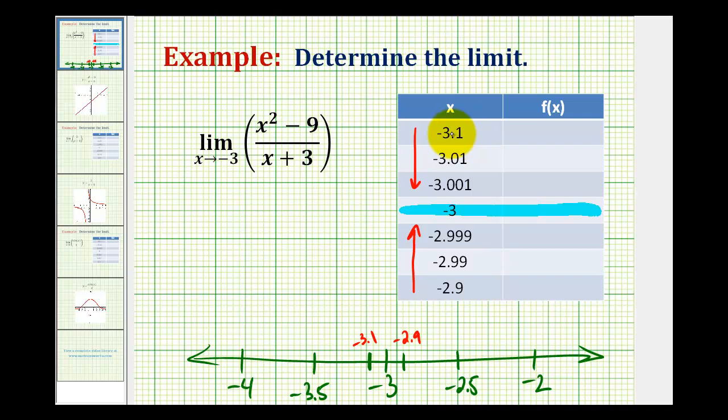On the left it was similar. I started with negative 3.1, negative 3.01, and then negative 3.001. So these values are less than negative three, approaching negative three.